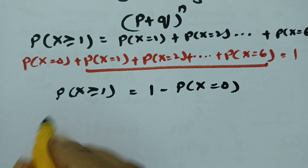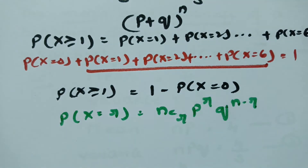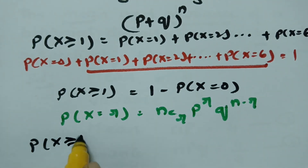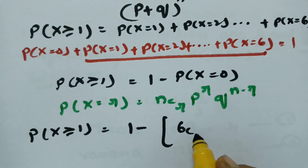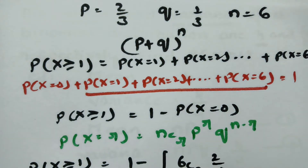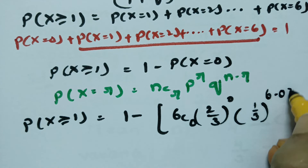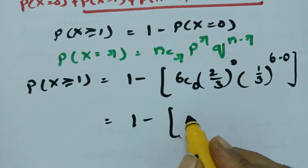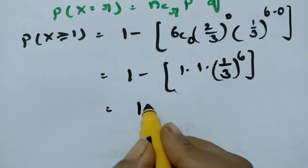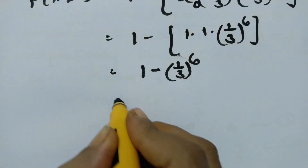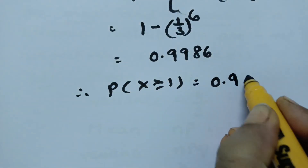According to the binomial distribution, P(X = r) = nCr × p^r × q^(n-r). So P(X ≥ 1) = 1 - 6C0 × (2/3)^0 × (1/3)^6. Since 6C0 = 1 and anything to the power 0 is 1, this becomes 1 - (1/3)^6, which equals 1 - 1/729 = 0.9986. Therefore, P(X ≥ 1) = 0.9986.